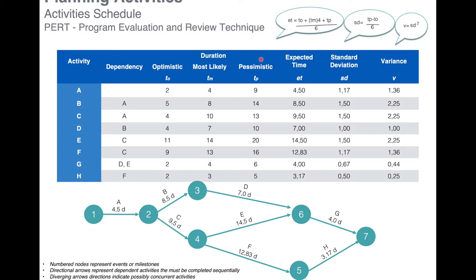For Activity A, the most likely duration is four days. From an optimistic perspective, this same activity can be performed in two days, and from a pessimistic point of view, we can perform it in nine days. So we have three possible durations for the same activity, and we do this for all activities in our project.